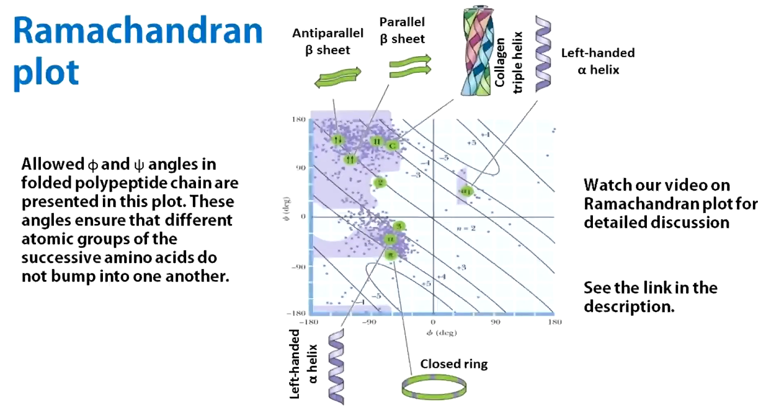Allowed values of phi and chi angles is represented as the Ramachandran plot. The Ramachandran plot tells us about the conformations that a polypeptide chain can adapt, but it does not tell us whether these adapted conformations will be stable.